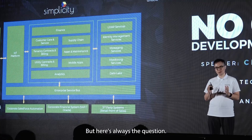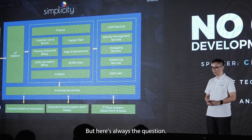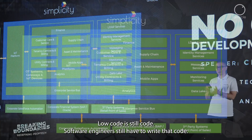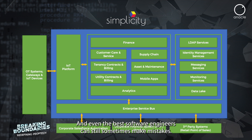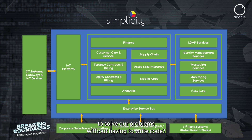But here's always the question: low-code is still code. Software engineers still have to write that code. And even the best software engineers can still sometimes make mistakes. Are there any other ways to instruct our computers to solve our problems without having to write code?